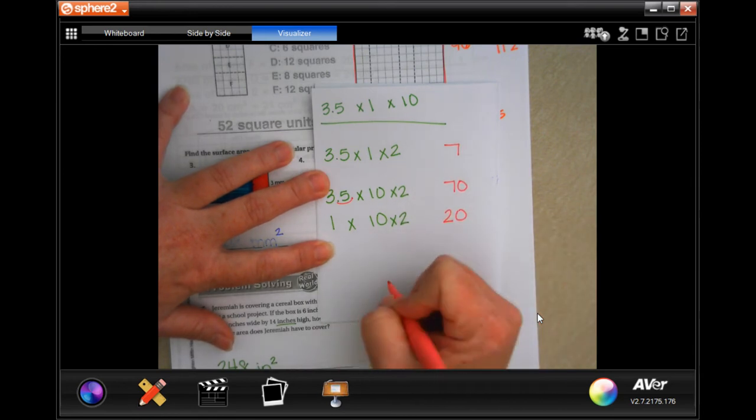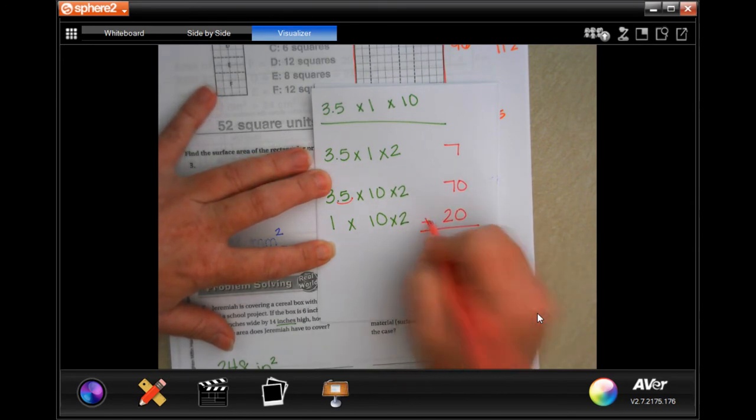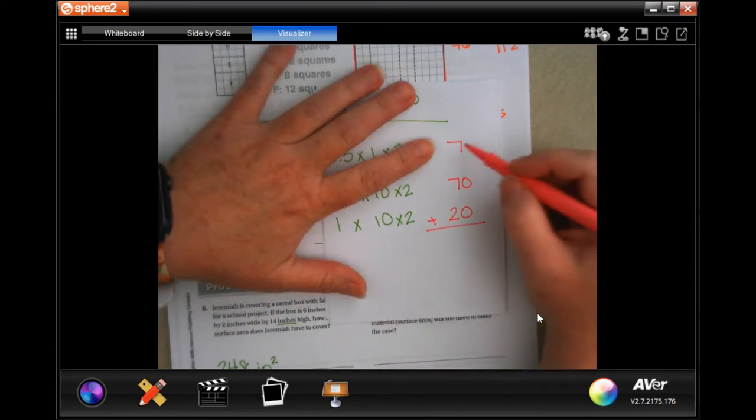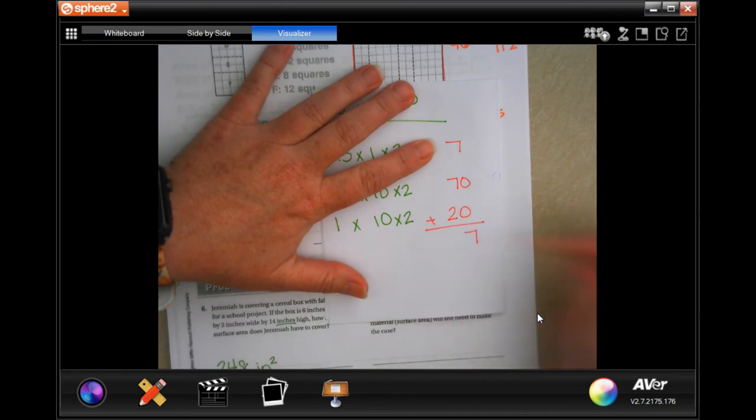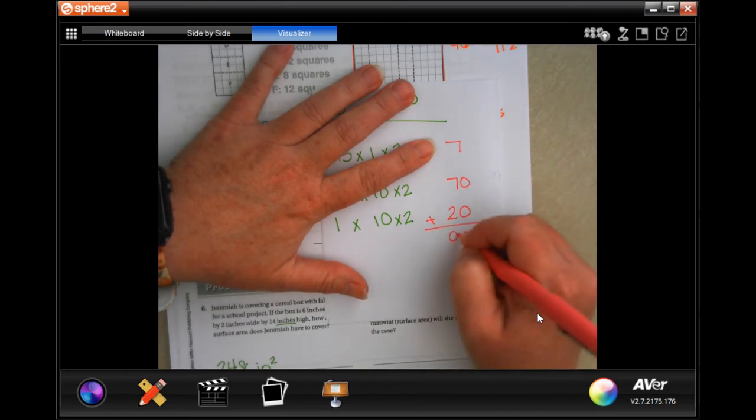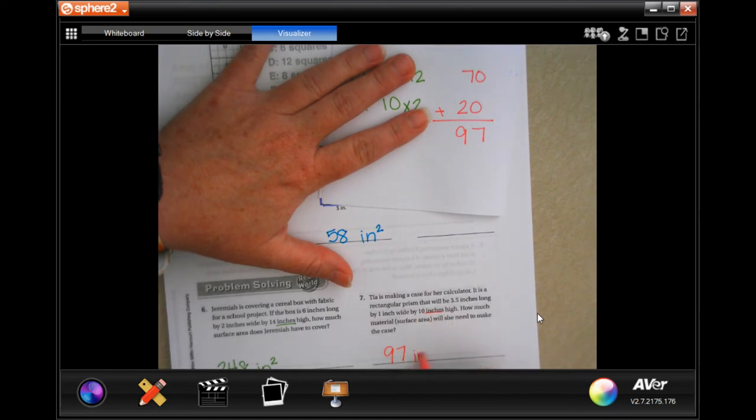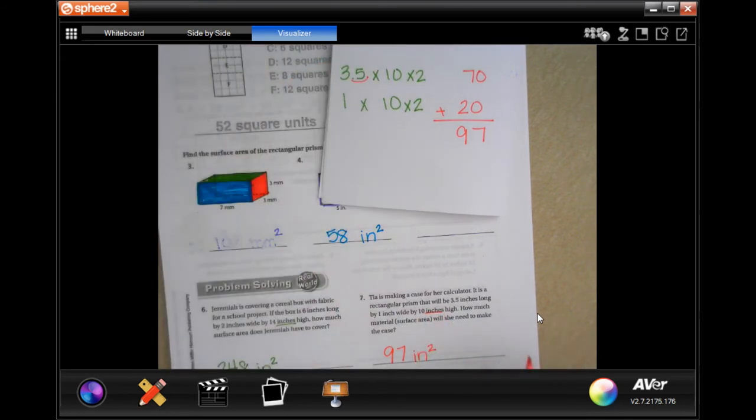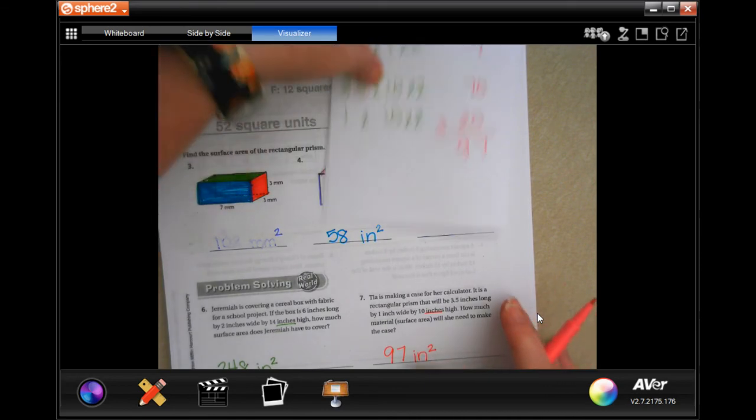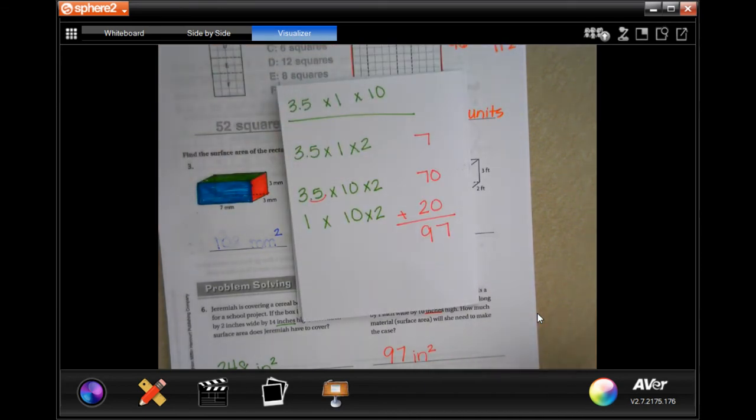If you need to do all that math work out here, the multiplication, you go right ahead. There is nothing wrong with that. I'm going to add those up. So, 7 plus 0 plus 0 is still going to be 7. 7 plus 2 is 9. 97 inches square. Pause it. Make sure you write down your work.